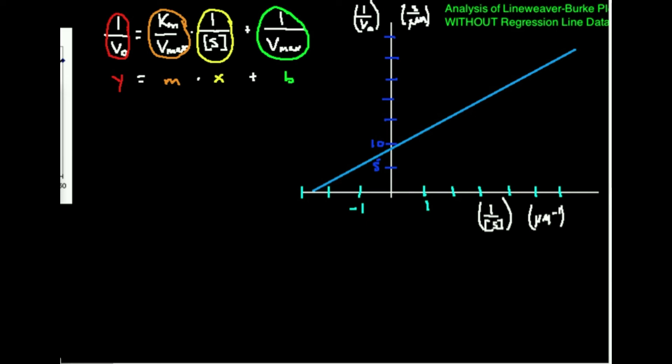I like to start with finding the Vmax — conceptually, that's the easiest thing to do. The one over Vmax is the y-intercept. So where's the y-intercept? That's right there. The y-intercept is one over Vmax. So B, the y-intercept, equals one over Vmax.